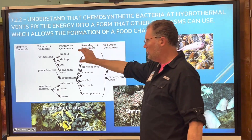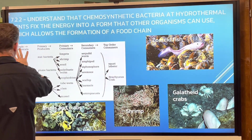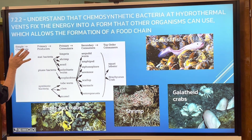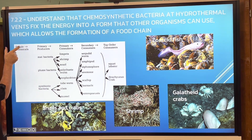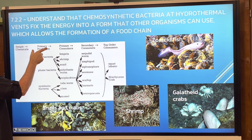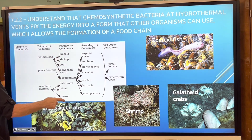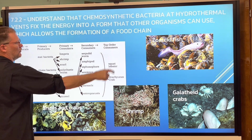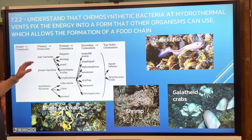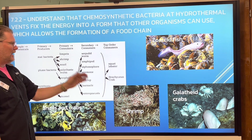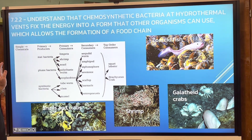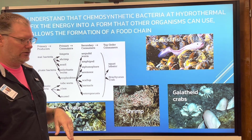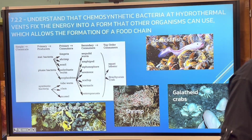Here is a food web, which is in your notes. You're going to create two food chains — both will start with simple chemicals, and then you choose a producer, a primary consumer, a secondary consumer, and a top consumer. Make sure they flow and are connected. You can complete those food chains later.